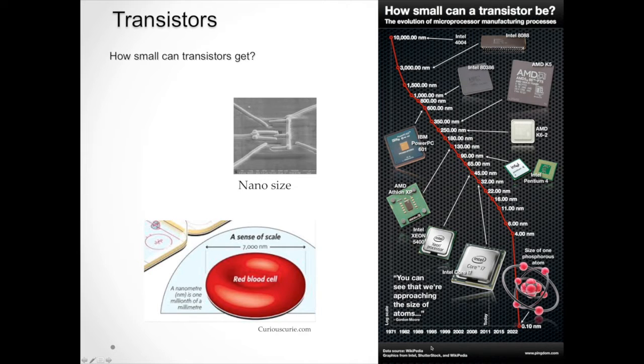And looking at this graph from Wikipedia, we can see that the transistor size has been decreasing continuously over the years, coming down to the size of one phosphorous atom. And the smaller the transistor size gets, the more you can fit into a smaller size unit. That's why we have highly powerful smartphones today, consisting of tiny, tiny transistors.